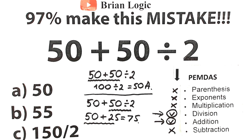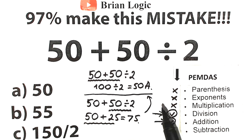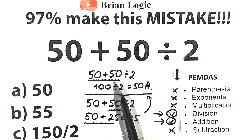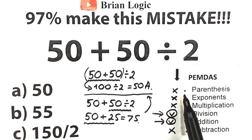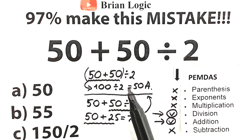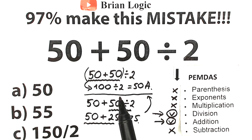Looking at our options, we don't see 75 listed separately, which is a tricky moment — some students go back to the wrong answer of 50. But 50 is absolutely incorrect, because we can't start with addition and then divide. That is a very big mistake in math. With parentheses the question would be different, since parentheses have the highest priority and would make addition happen first.